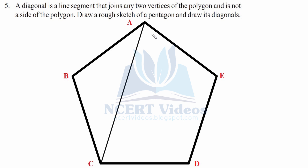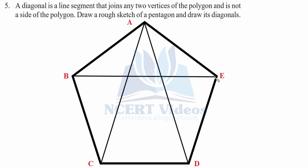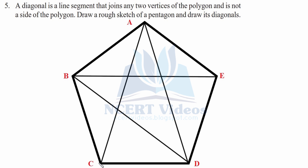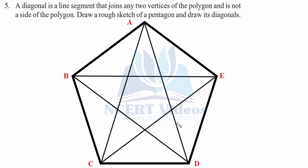From vertex A, the possible diagonals are AC and AD — we connect AC as the first diagonal, then AD. Note that AB and AE cannot be drawn as diagonals since they are sides of the pentagon. From vertex B, the diagonals are BE and BD.